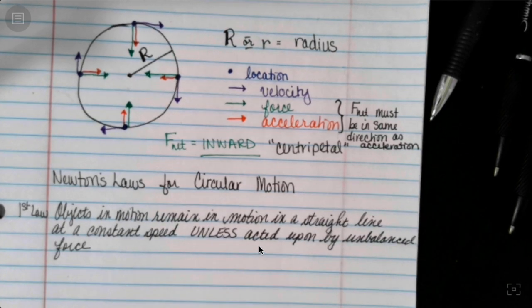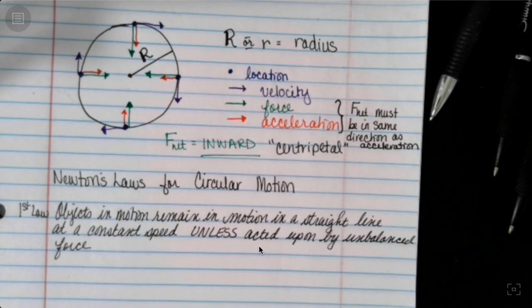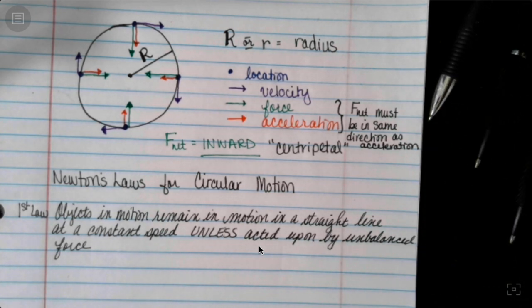Objects of motion remain in motion in a straight line at a constant speed unless acted upon by an unbalanced force. So we know the direction is changing.